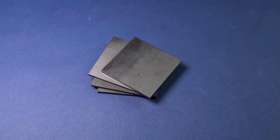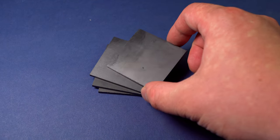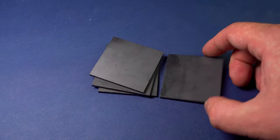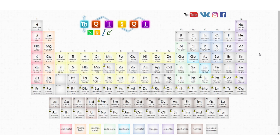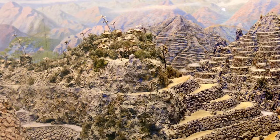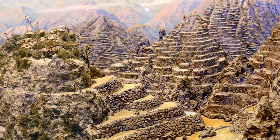Hello everyone. Today I would like to tell you about such an unusual metal as boron. In the periodic table, boron is located at the very top of group 3, right above aluminum. The history of using boron dates back from ancient China.